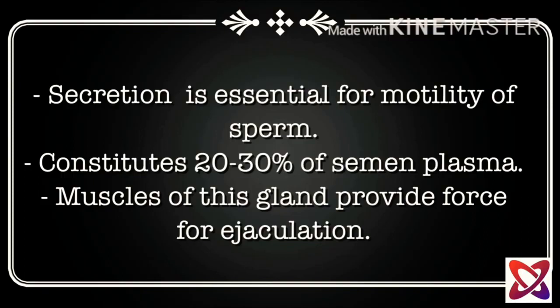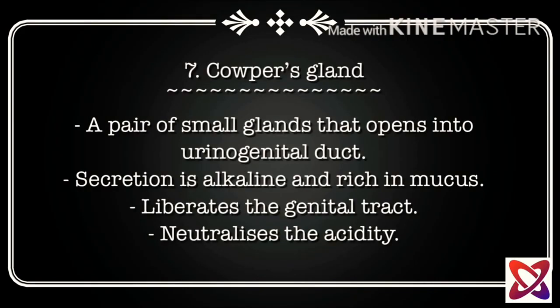The prostate gland's muscles provide force for ejaculation. The seventh component is Cowper's gland — a pair of small glands that open into the urinogenital duct. Its secretion is alkaline and rich in mucus. It lubricates the genital tract and neutralizes the acidity.